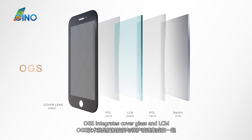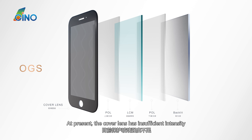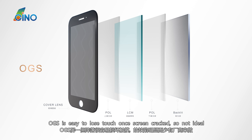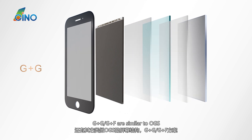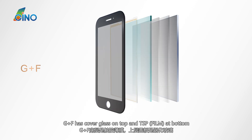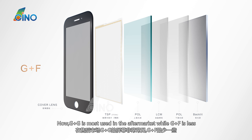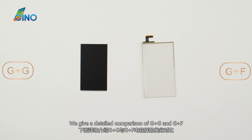OGS integrates cover glass in LCM. Coating and lithography are applied on the cover glass directly. At present, the cover lens has insufficient intensity, and OGS is easy to lose touch once the screen is cracked, so it's not ideal. G+G and G+F are similar to OGS. G+G has cover glass on top and TSP at the bottom; G+F also has cover glass on top and TSP at the bottom. Because of technical maturity, more suppliers, and lower cost, G+G is most used in the aftermarket while G+F is less.